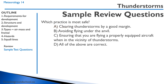Question: Which practice is most safe? A) clearing thunderstorms by a good margin — correct, you want to go around them by plenty of distance. B) avoiding flying at the anvil — correct, the anvil can have downdrafts and hail. C) ensuring you're flying an appropriately equipped aircraft with weather radar near thunderstorms — also correct. The answer is D) all of the above.